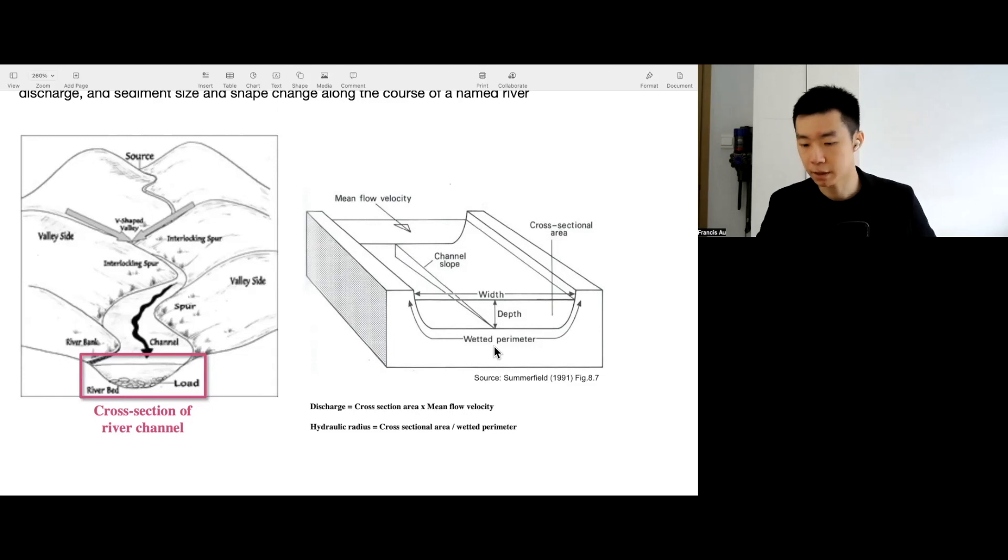So in the exam setting, the actual written paper, you'll be provided with the velocity and sometimes the cross-sectional area. Not that often you'll be asked to calculate discharge anyway. So just knowing what it means will be enough.